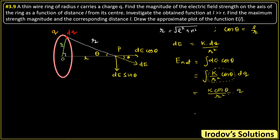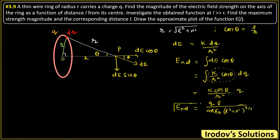Writing k as 1/(4π ε₀) in Irodov's notation, the result becomes: E = q·l / [4π ε₀ · (l² + r²)^(3/2)]. This net electric field is directed along the axial direction (the x-direction).